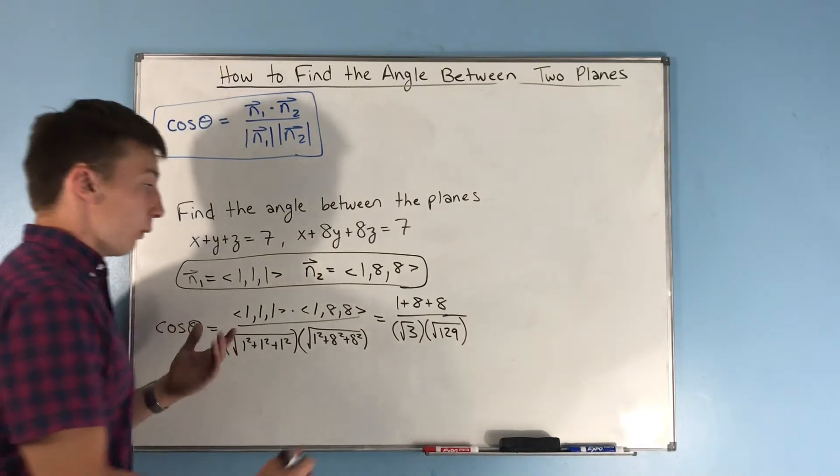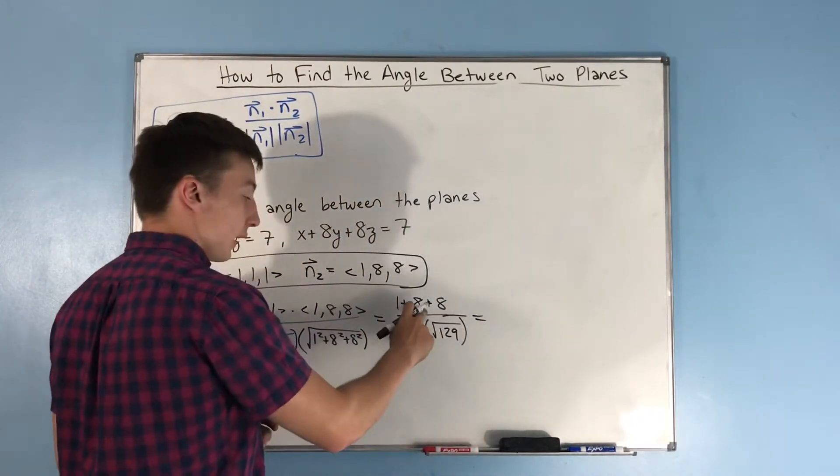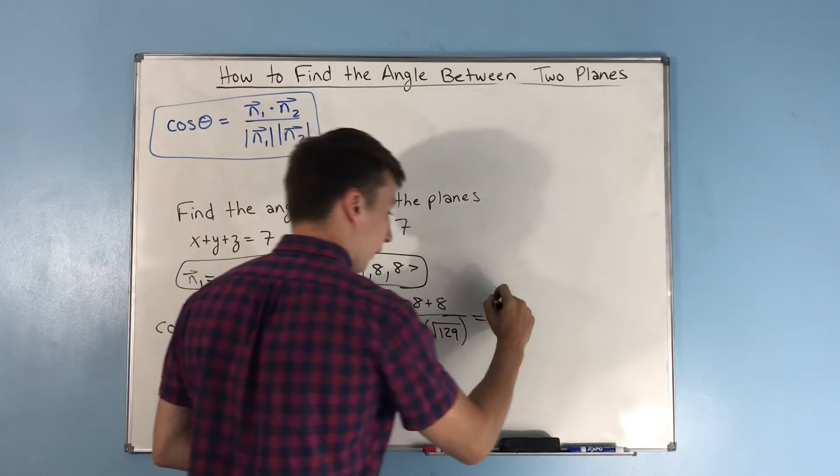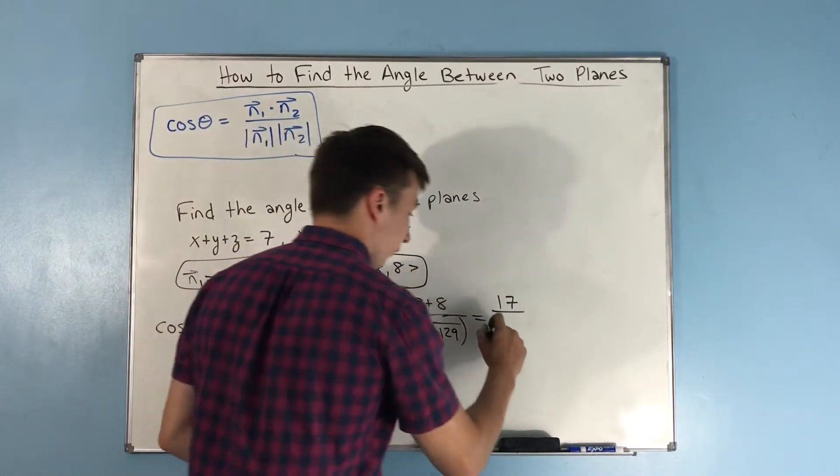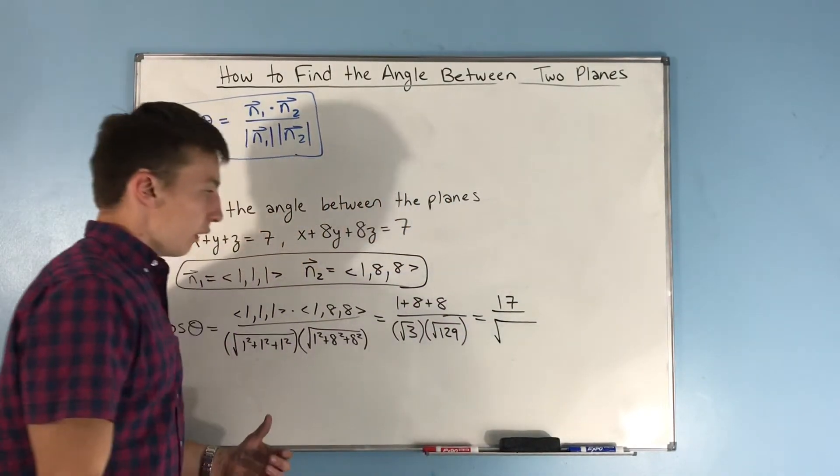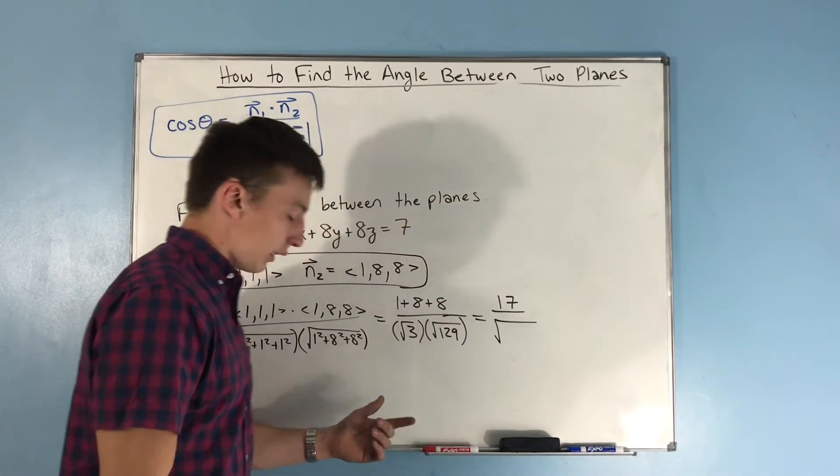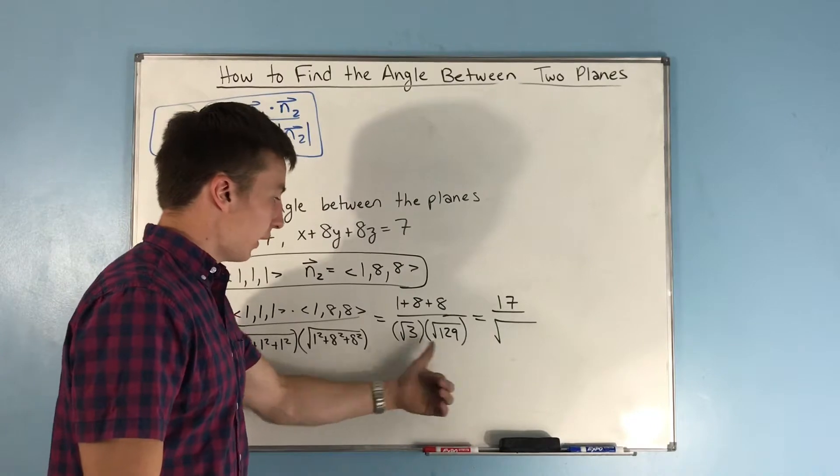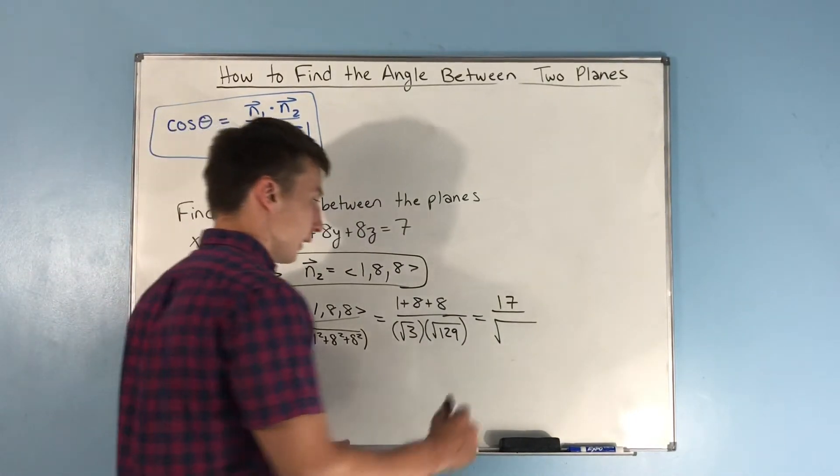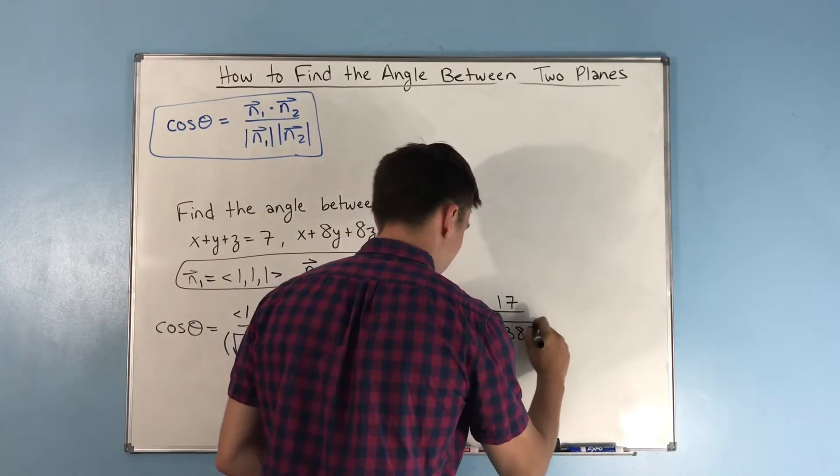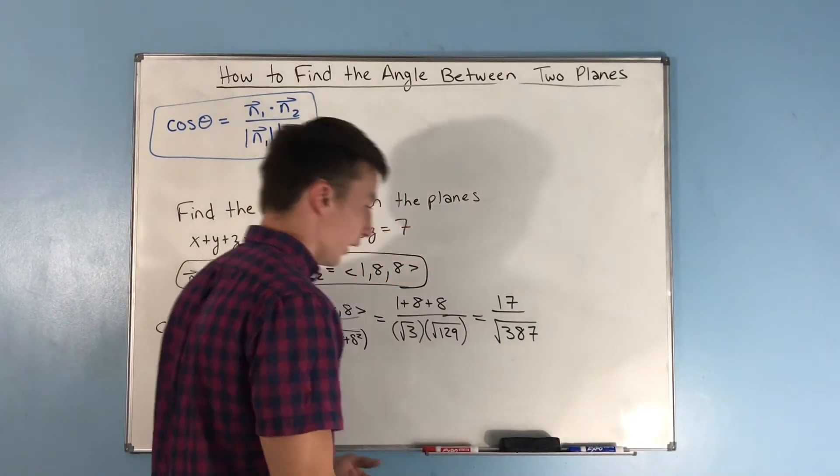And now we can just say that this is 1 plus 8 is 9 plus 8 is 17. So we have 17 over, we can multiply these two things together. Let's see if I can do this in my head here, not look at my paper. It's 130 times 3, which is 390 minus 3 is 387. Right? Is that it? Yeah, 387. All right.